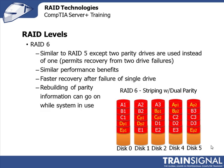Our last primary RAID level is RAID 6, which is very similar to RAID 5 except you have two parity drives instead of one. This means you can actually recover from two drive failures instead of one. We have five drives in the array with data striped across, and parity stored on two drives. We have similar performance benefits, faster recovery after a single drive failure, and the system can rebuild parity information while still in use. Unfortunately, RAID 6 never really caught on, probably because of the added expense of the extra disk.